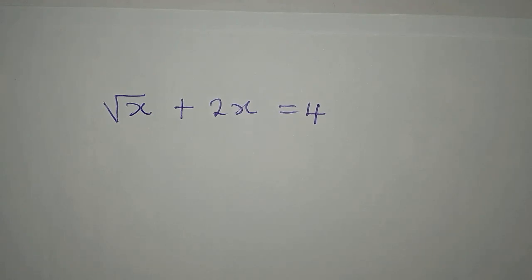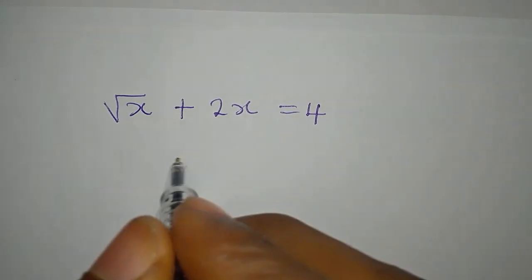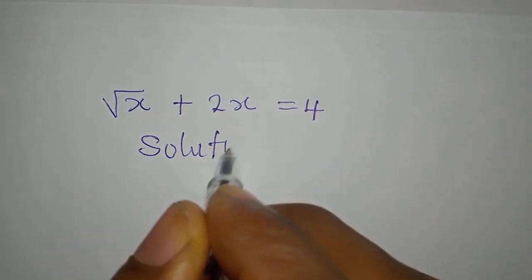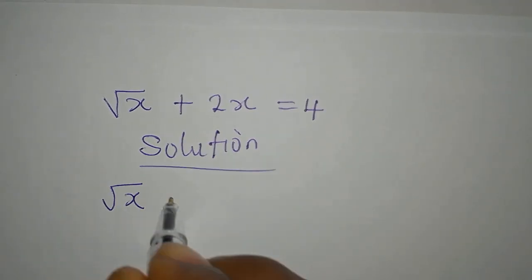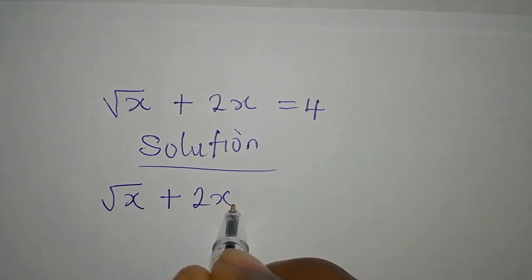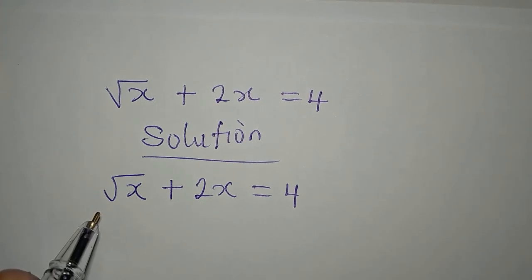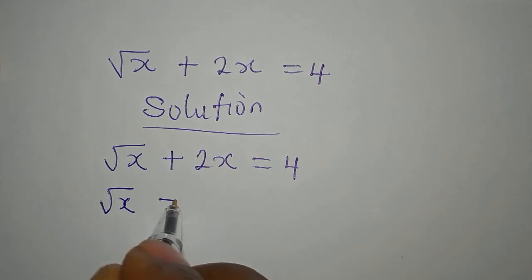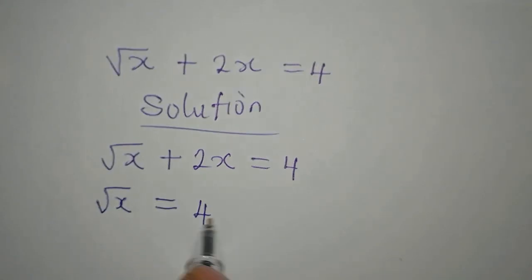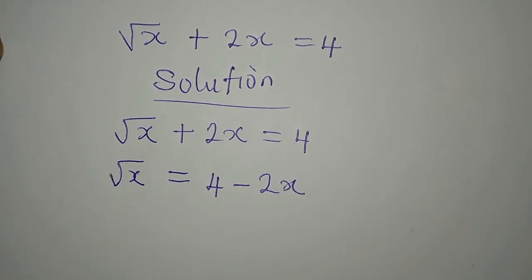Hello everyone, let's provide the solution to this problem. We have square root of x plus 2x equals 4. What we are to do is to make root x the subject, so root x will be on the left hand side to be equal to 4 minus 2x. I have made root x the subject.